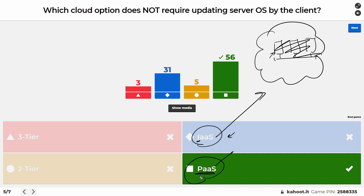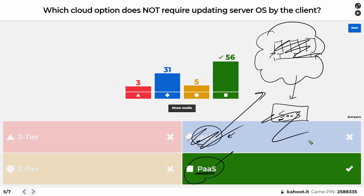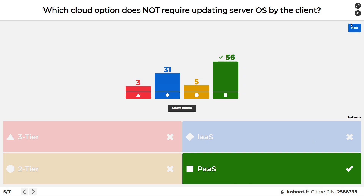Platform as a Service says: let the vendor take care of the nitty-gritty details — like what OS is running and keeping it patched — while you just use it as a development environment. PaaS has less responsibility than IaaS. Software as a Service is the customer doing nothing except consuming the application — like Salesforce, where you simply log in and use the service without worrying about operating systems or virtualized networking. So the cloud option not requiring the client to update the server OS is Platform as a Service.